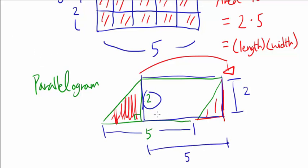If you're confused, think of it like this. Call this part star and this part circle. For the 5, 5 was circle plus star, so we still have star plus circle after we move the triangle, so the length still has to be 5.